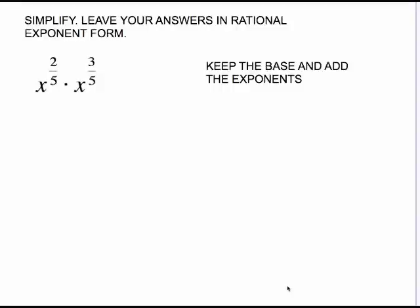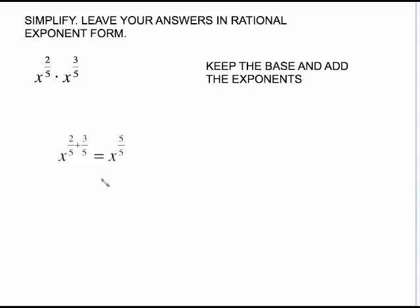Now we're going to do some problems using rational exponents and our exponent laws. For x to the 2/5 times x to the 3/5: the rule says keep the base and add the exponents — 2/5 plus 3/5. This is easy because we already have a common denominator. 2/5 plus 3/5 is 5/5, which gives us x to the first. You don't have to write the 1 — you can just write x.